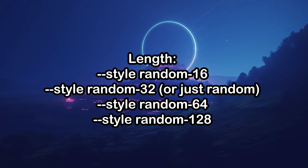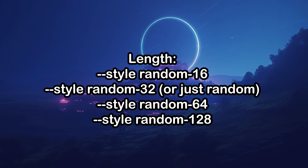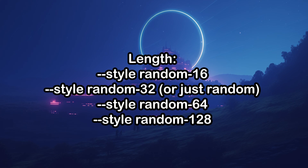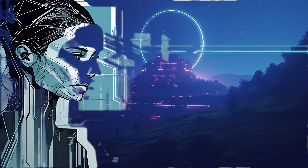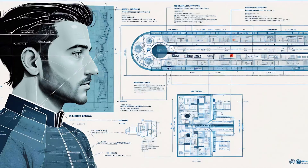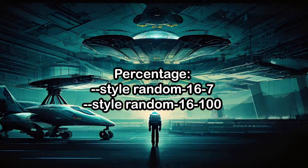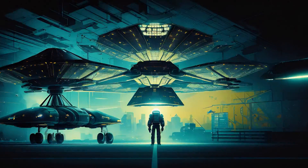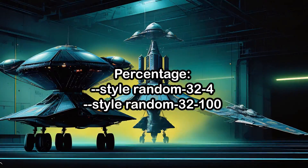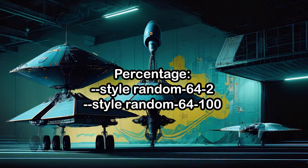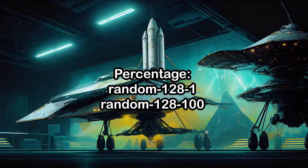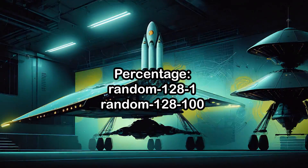The length in this case is 16, 32, 64, and 128. You don't have to specify it for 32, though. The percentage seems to be a varying amount depending on your random command. For random 16 it seems to be 7 to 100. For random — aka 32 — it seems to be 4 to 100. For random 64 it seems to be 2 to 100. And for random 128 it seems to be 1 to 100.